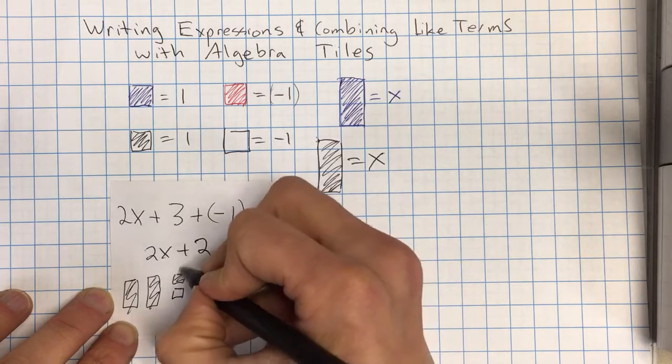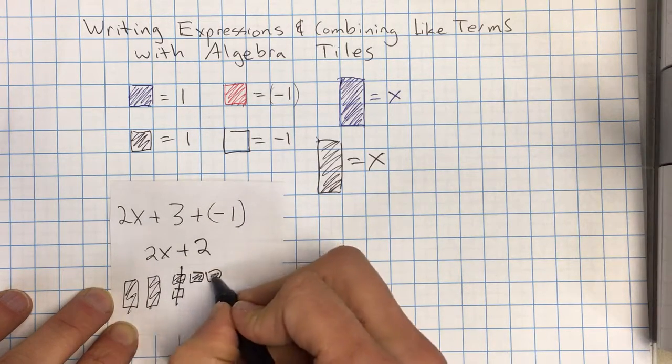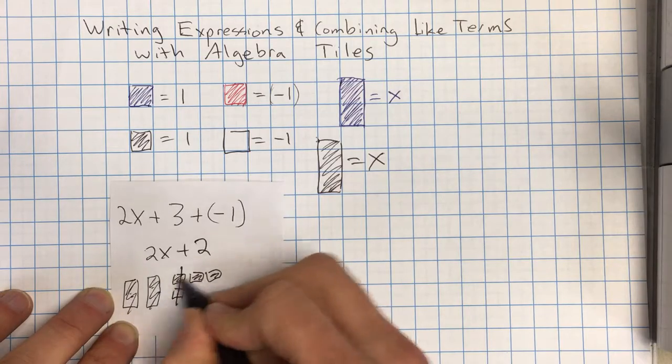And then I see a pair, so I can cross those out. And I see 2x plus 2. Again, because these are x's and these are our positives.